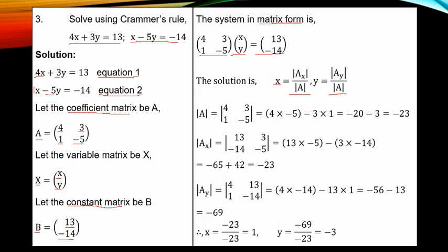We start with the coefficient matrix — entries 4, 3, 1, minus 5. The determinant is the difference of the product of the two diagonals: main diagonal is 4 times minus 5, minus the product of the second diagonal, 3 times 1. So you have minus 20 minus 3 equal to minus 23.